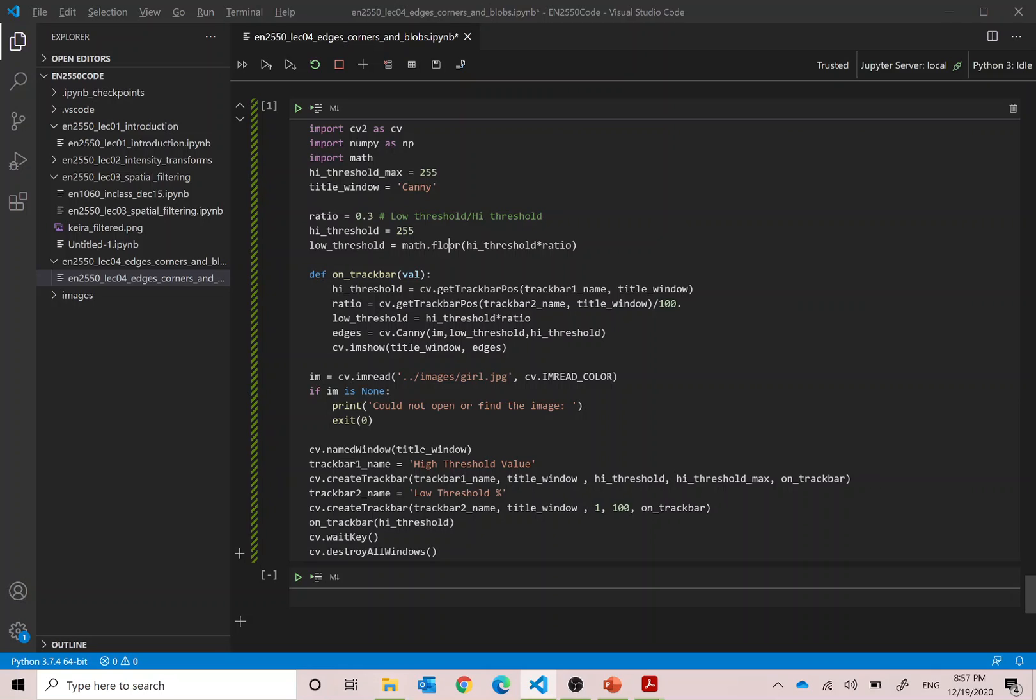Now we will look at the code. In this one, I have defined the high threshold as 255. And then I have defined a ratio, low threshold to high threshold ratio. Usually the low threshold is set to be one third of the high threshold. Therefore, I have defined this ratio as 0.3. High threshold is set to 255. This is the high threshold max. And then low threshold is you multiply by the ratio and get the integer.